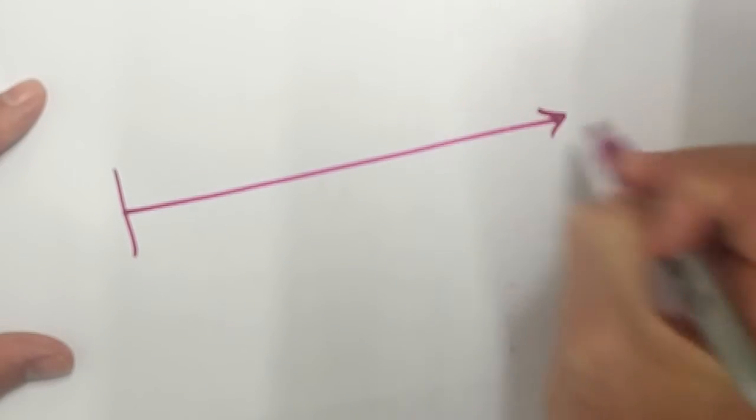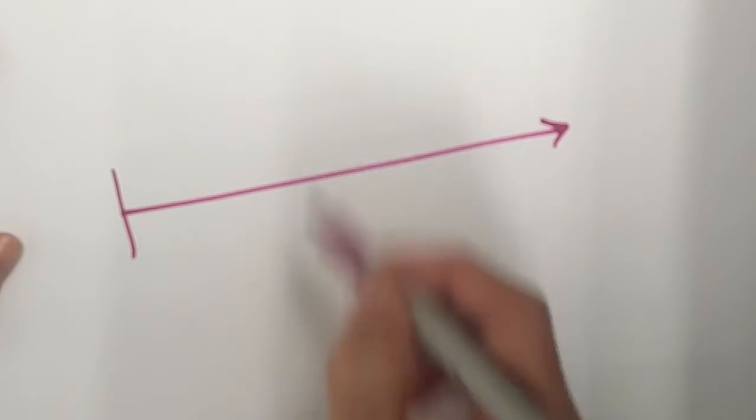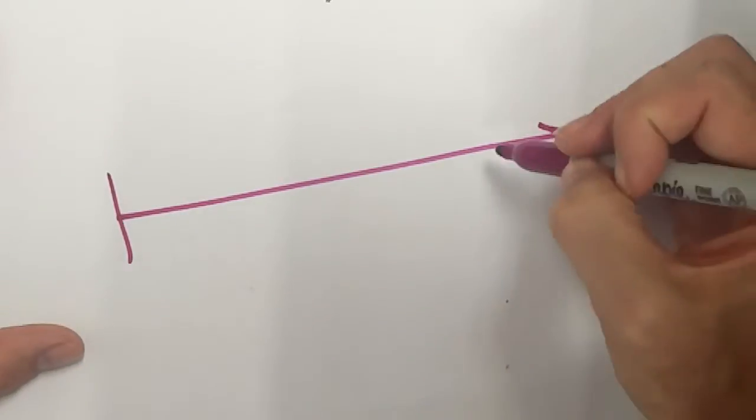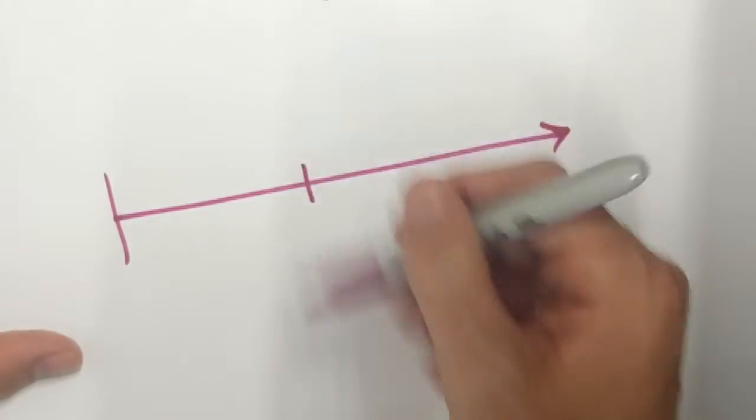I'm just going to start off with a model. This is just going to be a normal number line. Instead of making a double number line, I'm just going to have it focused on each side of the number line here.